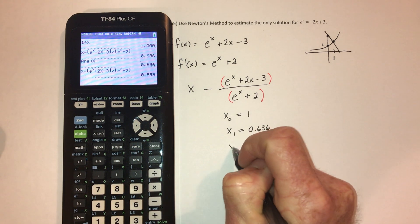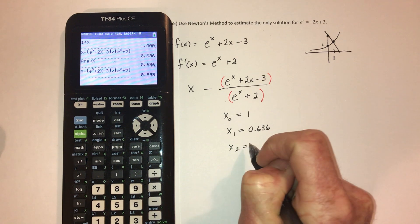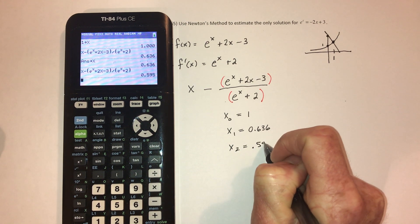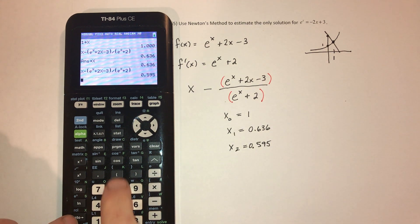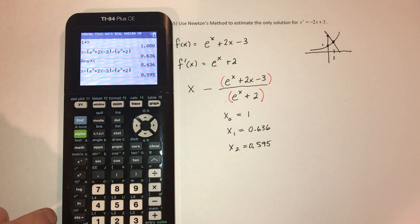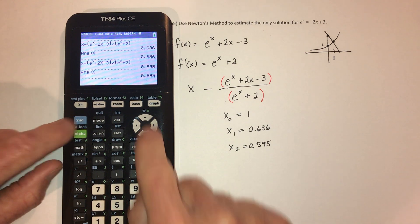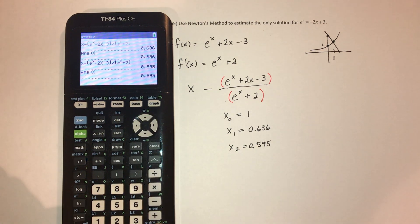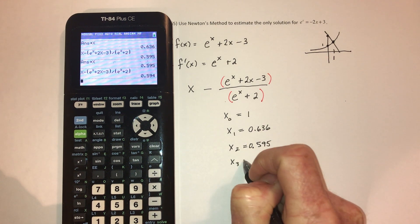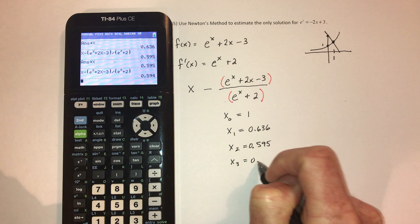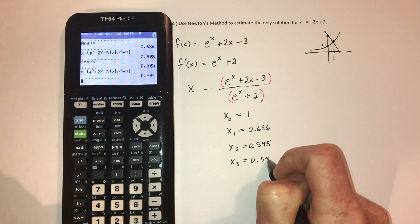And then it says that 0.595 is the next possibility. Store that as x. And then grab the formula again. And we're almost there. Because now it just barely changed. It's now 0.594.